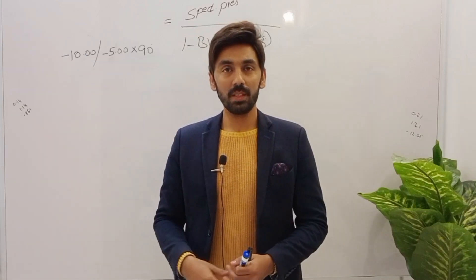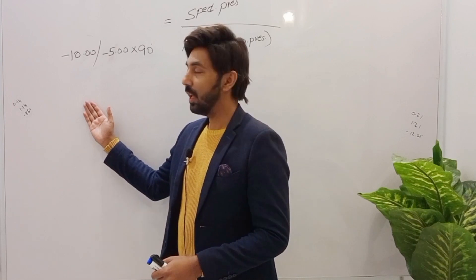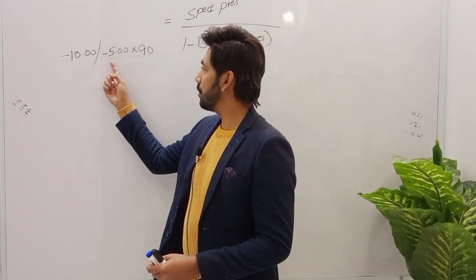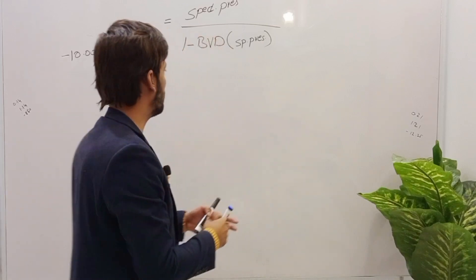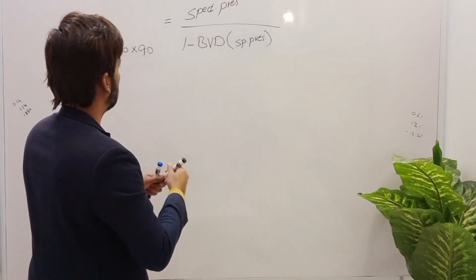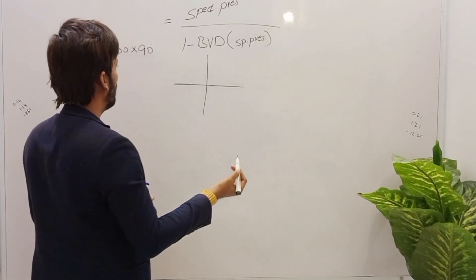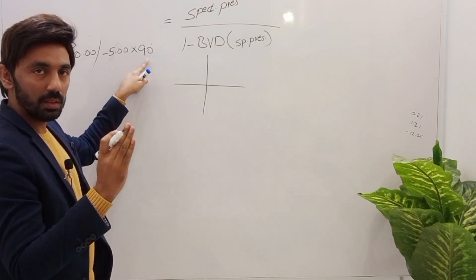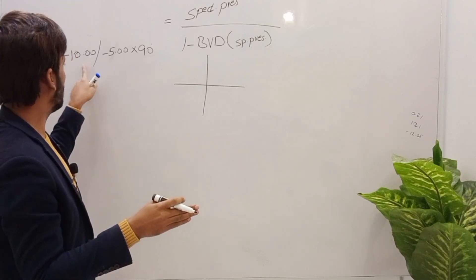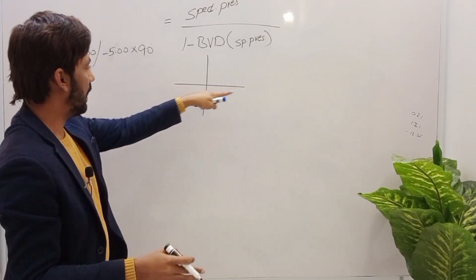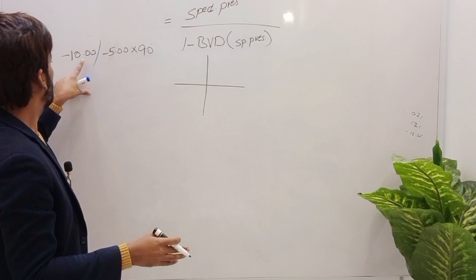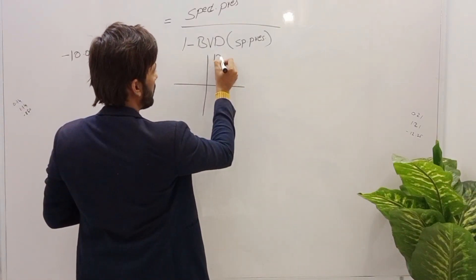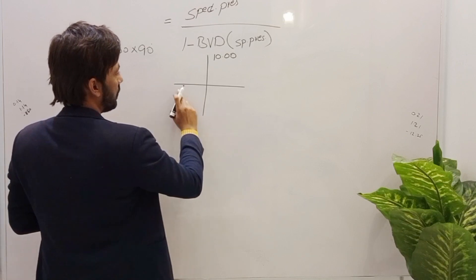Now for Example 2, where both sphere and cylinder have minus signs: minus 10 sphere and minus 5 cylinder at 90 degrees. We apply an optical cross first. The axis of the cylinder is 90 degrees, so we place our spherical minus 10 at the 90 meridian, and the 180 meridian is 90 degrees apart.